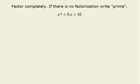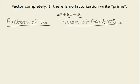The first step to factoring this expression is to find two numbers whose product is 16 and whose sum is 8. So let's list some factors of 16. I know 1 and 16, 2 and 8, and 4 and 4.